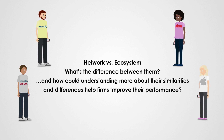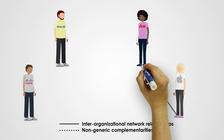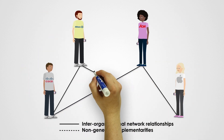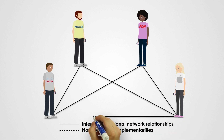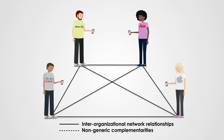Firms don't operate in isolation. They are involved in a variety of inter-organisational relationships. Some of these sets of relationships are called networks. Another increasingly popular term is ecosystems. But what's the difference?